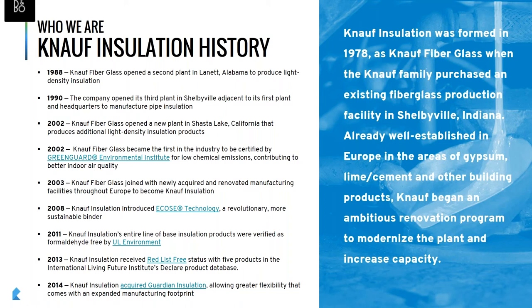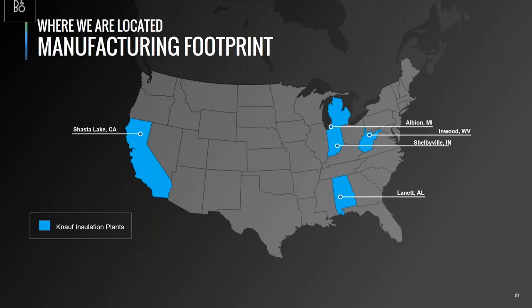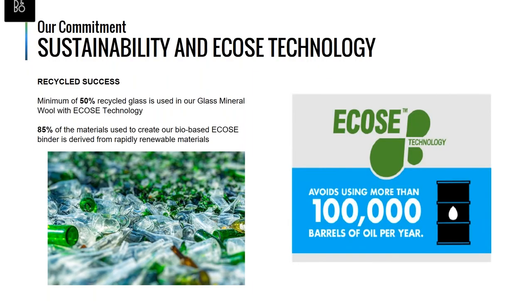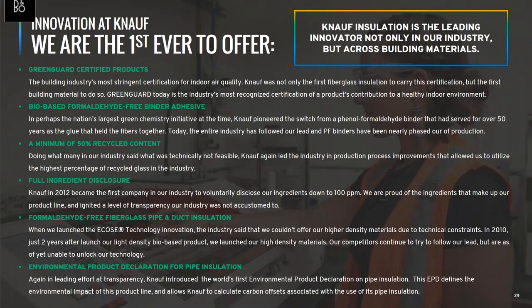Key milestones include Knopf Fiberglass becoming the first insulation company to earn GreenGuard certification in 2002, and the introduction of ECOS technology in 2008 — a sustainable binder chemistry that replaces phenol formaldehyde binder traditionally used in fiberglass products. In 2011, the entire line of base insulation products was verified as formaldehyde-free by UL Environment. There are six manufacturing locations in the United States: two in Shelbyville, Indiana; one in Albion, Michigan; one in Inwood, West Virginia; one in Lynette, Alabama; and one in Shasta Lake, California.